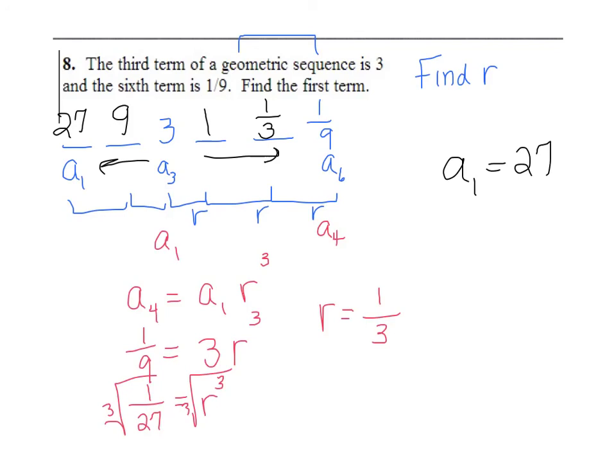You can use this technique where you start anywhere in the sequence, treat it as a sub 1, go to any later term, find r, and then work backwards until you get the first term.